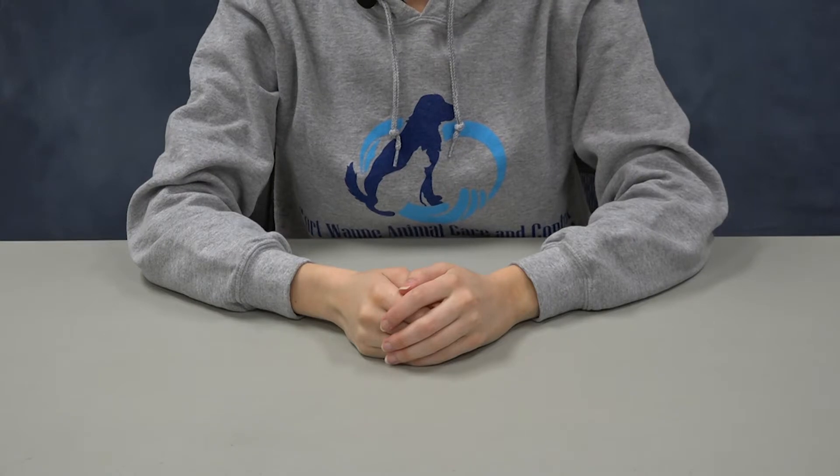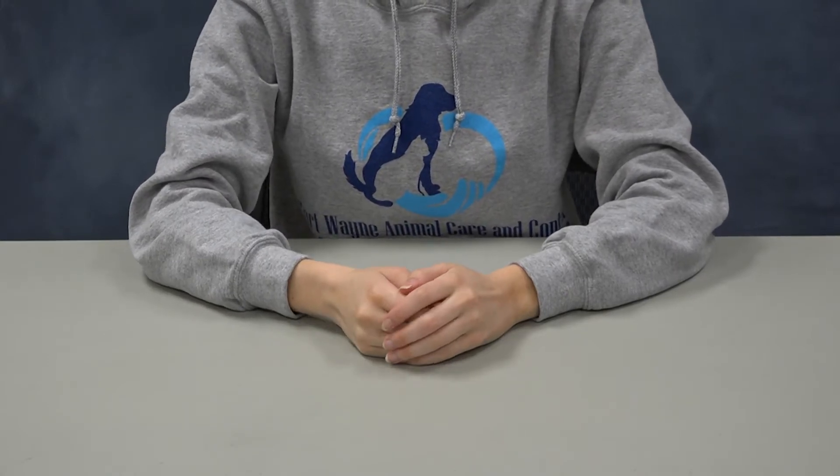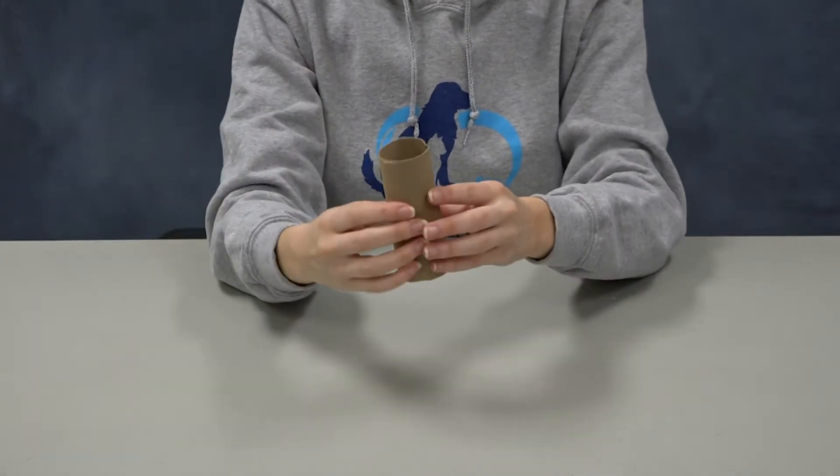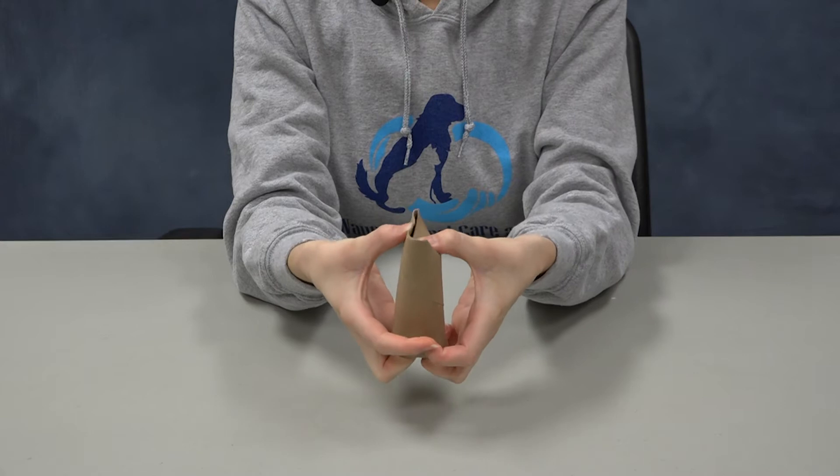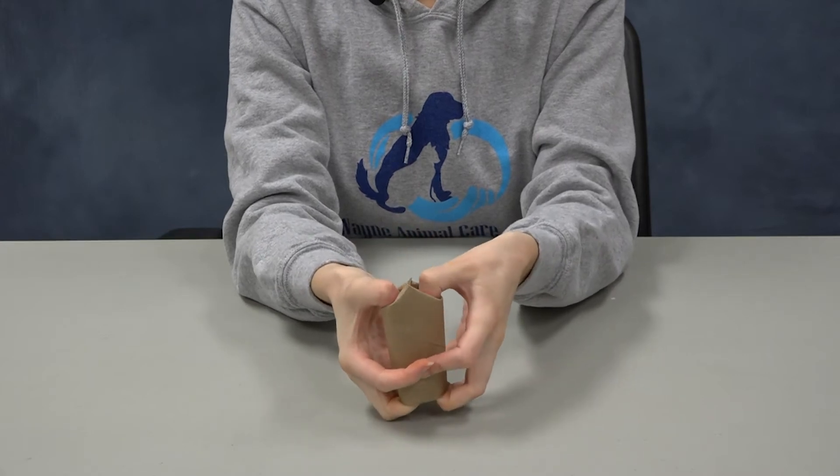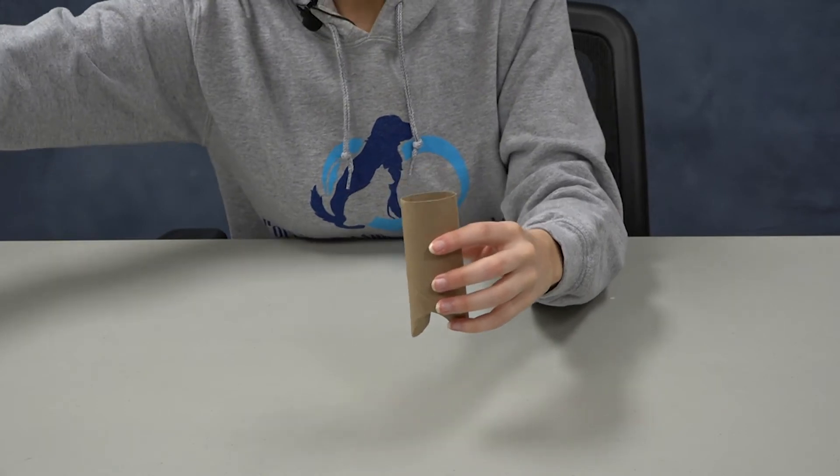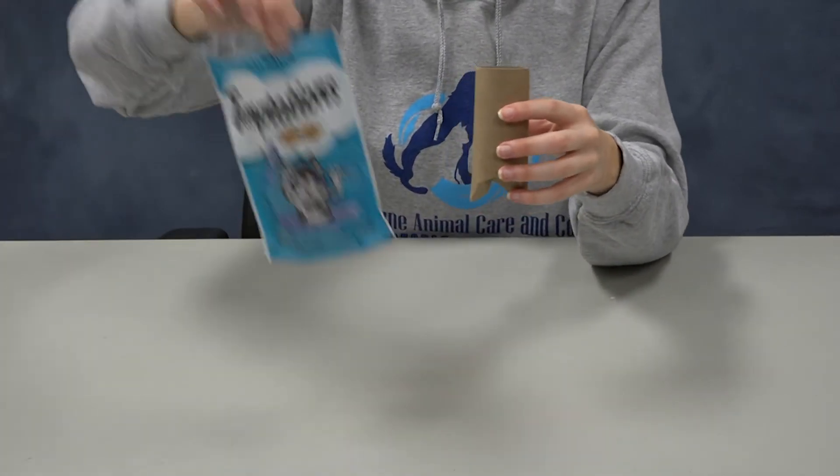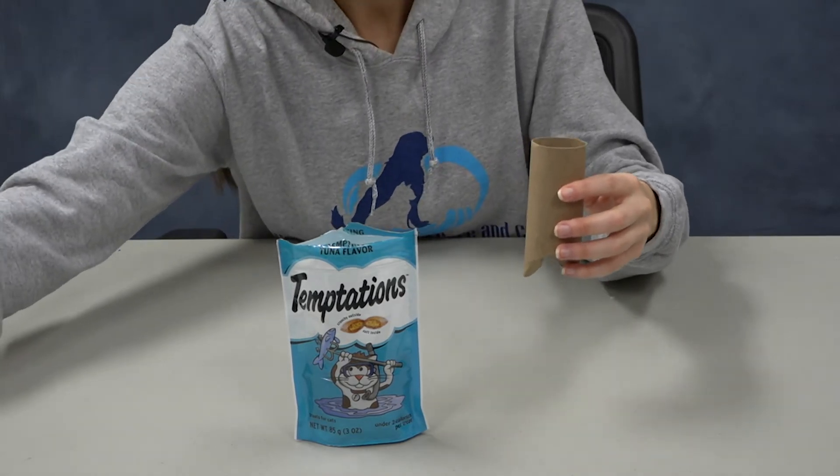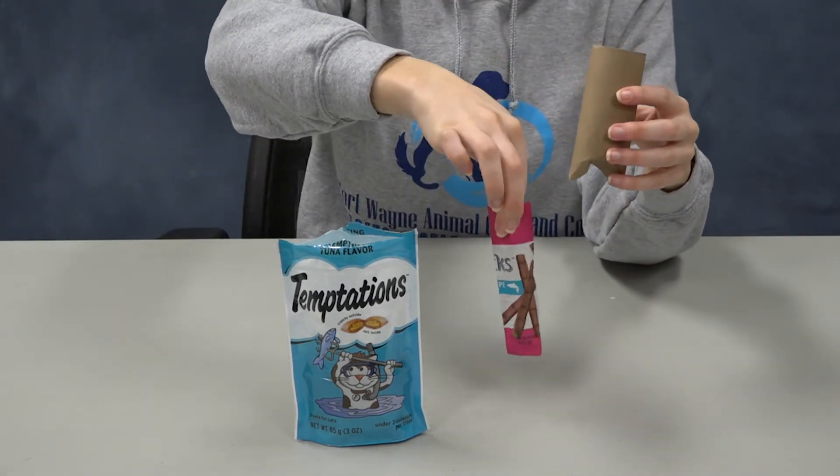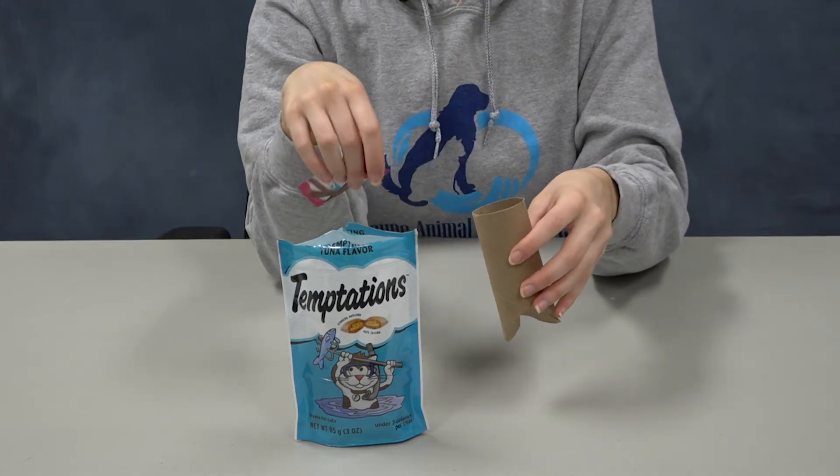We're going to do the same thing for your cat enrichment, but with cat treats. So you're going to take another toilet paper roll and do the same thing as before and push your thumbs down to the center like so. And then get some of your cat's favorite treats. So today we have these temptation treats and then kind of like a beef jerky stick for cats. And then also a fun thing could be to sprinkle some catnip inside.